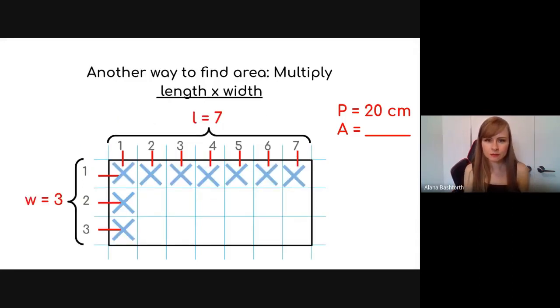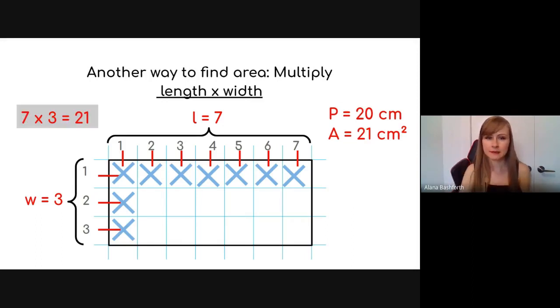So for this one, the length is seven, and the width is three. And don't worry too much about which one's length and which one's width. It doesn't really matter as long as you're multiplying seven times three. And that will get you to 21 that we got when we counted up all the squares. And then that's 21 centimeters squared.